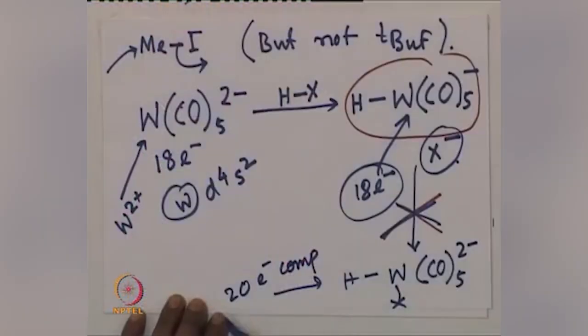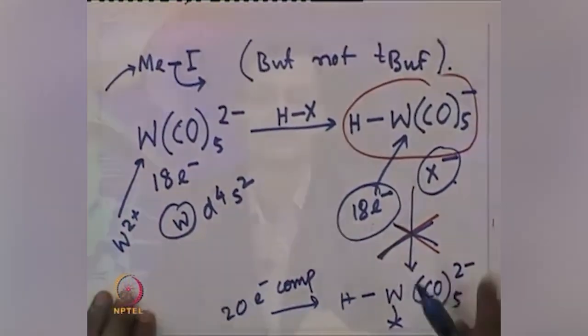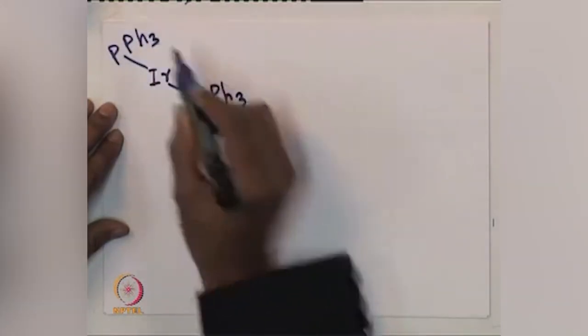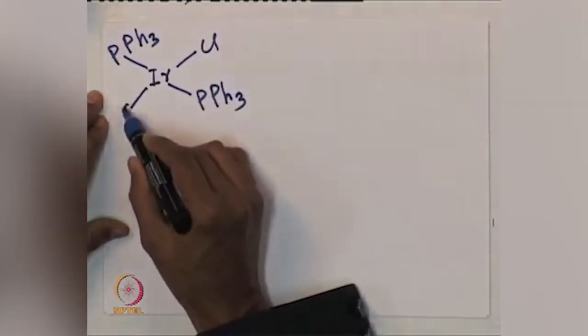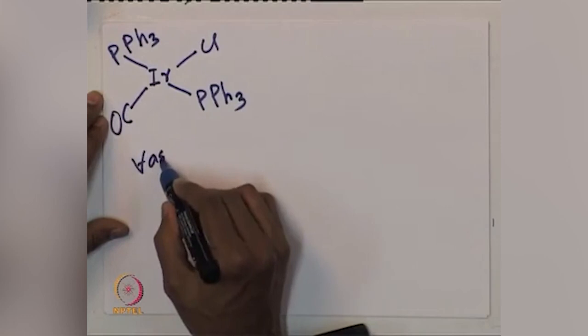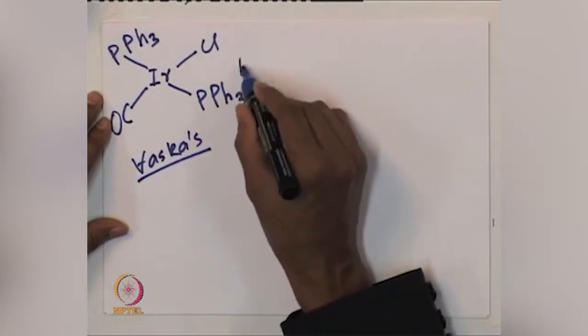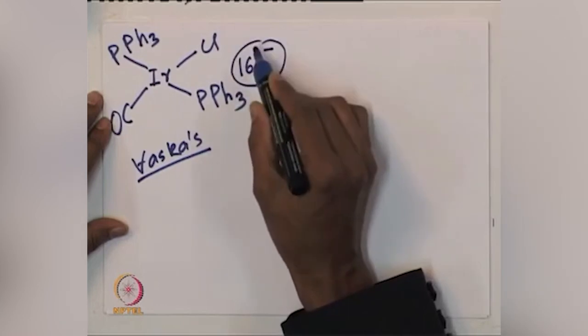The X minus will not combine with tungsten, so we will not get the 20-electron complex; we get the 18-electron complex. Next, we discuss another complex for its oxidative addition — the famous Vaska's complex, which is an iridium complex. It has trans geometry with PPh3 (or PR3), a chloro ligand, and a carbonyl. Electron counting shows it is a 16-electron species.